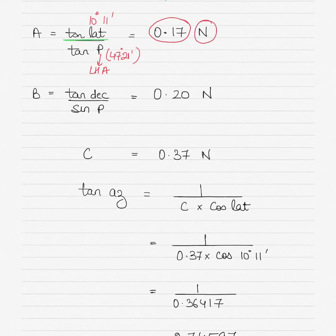Then you name your A. A is named opposite to latitude unless your LHA is between 90 and 270. Now your LHA is not between 90 and 270, it is 47 degrees 21 minutes, so you name it opposite to latitude. Your latitude was south 10 degrees 11 minutes, so you name A north.